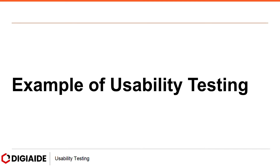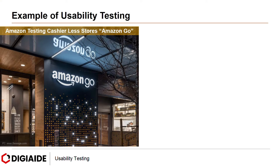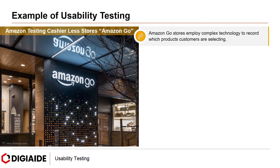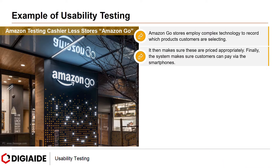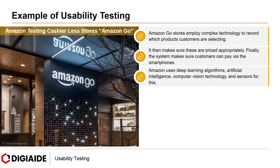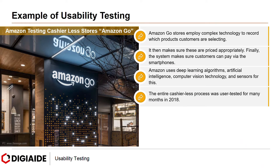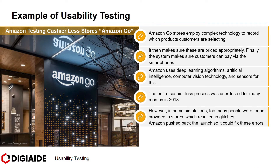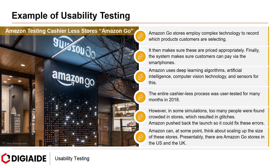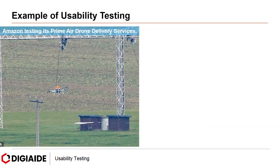Moving on to examples of usability testing. The first example is Amazon testing cashless stores — Amazon Go. Amazon Go stores employ complex technology to record which products customers are selecting, make sure these are priced appropriately, and allow customers to pay via their smartphones. Amazon uses deep learning algorithms, artificial intelligence, computer vision technology, and sensors for this. The entire cashless process was user-tested for many months in 2018. However, in some situations too many people were found crowded in stores, resulting in glitches. Amazon pushed back the launch to fix these errors. Presently, there are Amazon Go stores in the US and UK in double-digit figures.